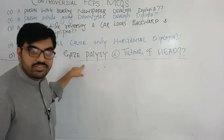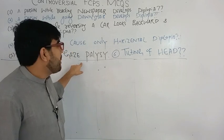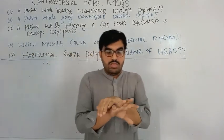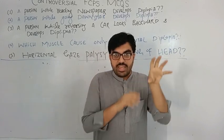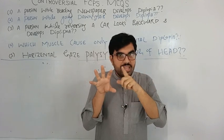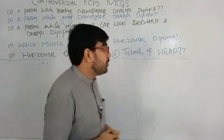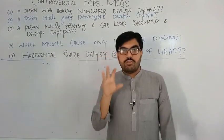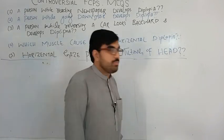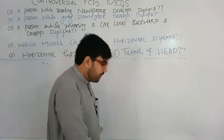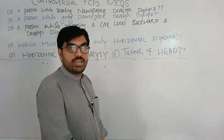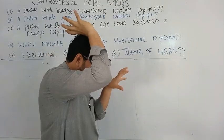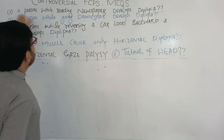The abducens nerve (cranial nerve 6) causes only abduction, which is why it causes horizontal diplopia or horizontal gaze palsy. When a person reverses a car and looks backward, one eye cannot look laterally because cranial nerve 6 is paralyzed, causing diplopia. A person going downstairs develops diplopia because the strongest depressor of the eyeball — the superior oblique — is paralyzed, so looking downward the eye cannot depress and flies away, causing diplopia.